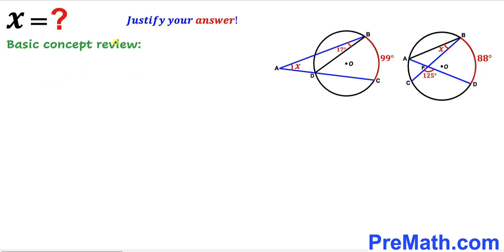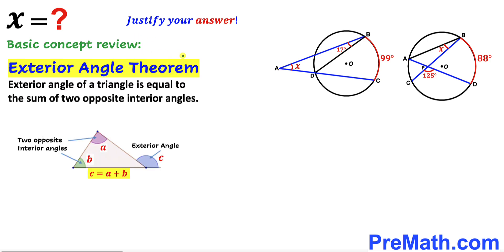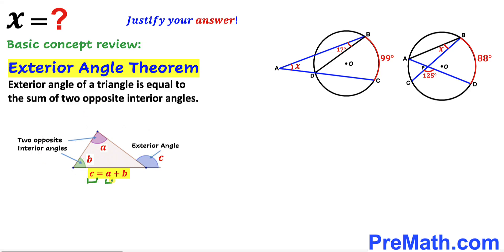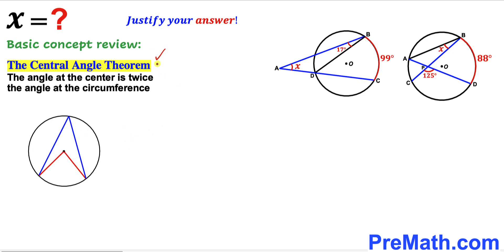Before we proceed, let me go over the basic concepts. Let's recall the exterior angle theorem. According to this theorem, the exterior angle of a triangle is equal to the sum of two opposite interior angles. As you can see in the diagram, angle C is the exterior angle whereas angles A and B are the two opposite interior angles, such that angle C equals angle A plus angle B.